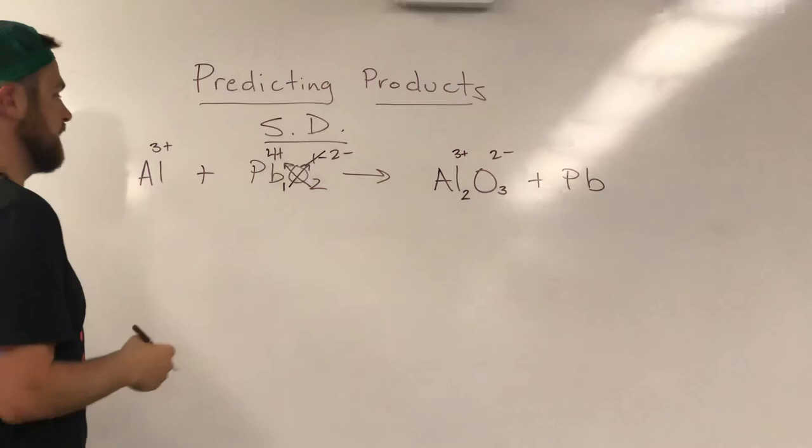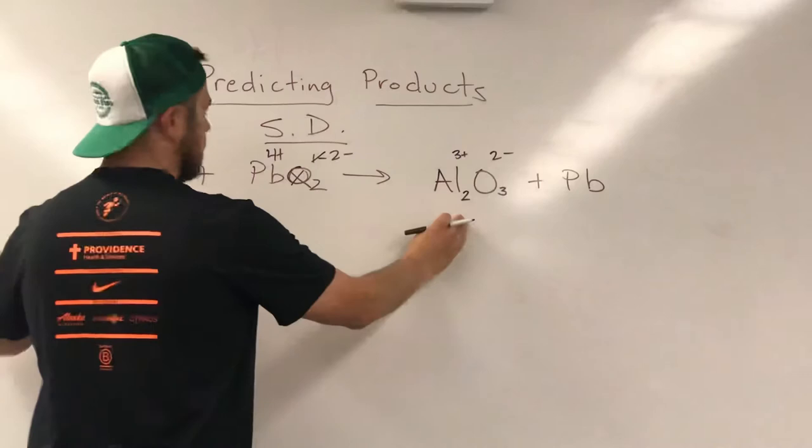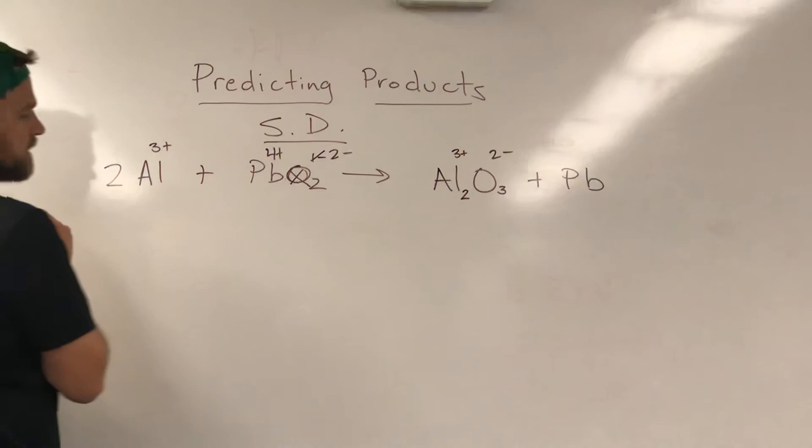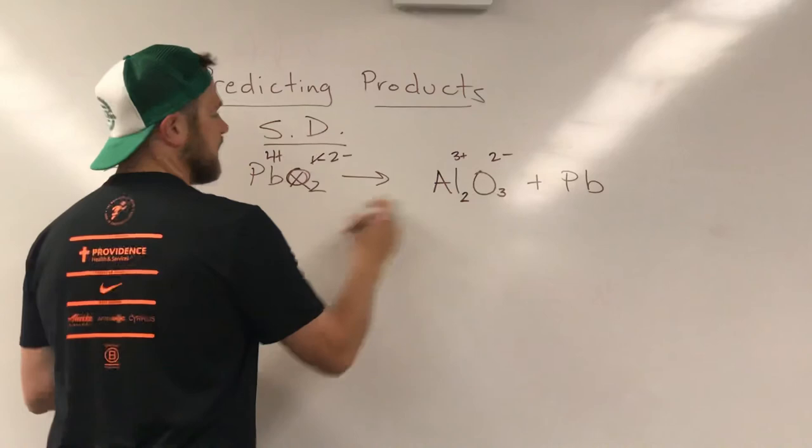And now all we need to do is go ahead and balance. Aluminum, I see one and two, so I'm gonna put a two to balance it there. Lead, I see one in each place, okay. But oxygens are gonna be a problem—I have two oxygens here and three oxygens here.